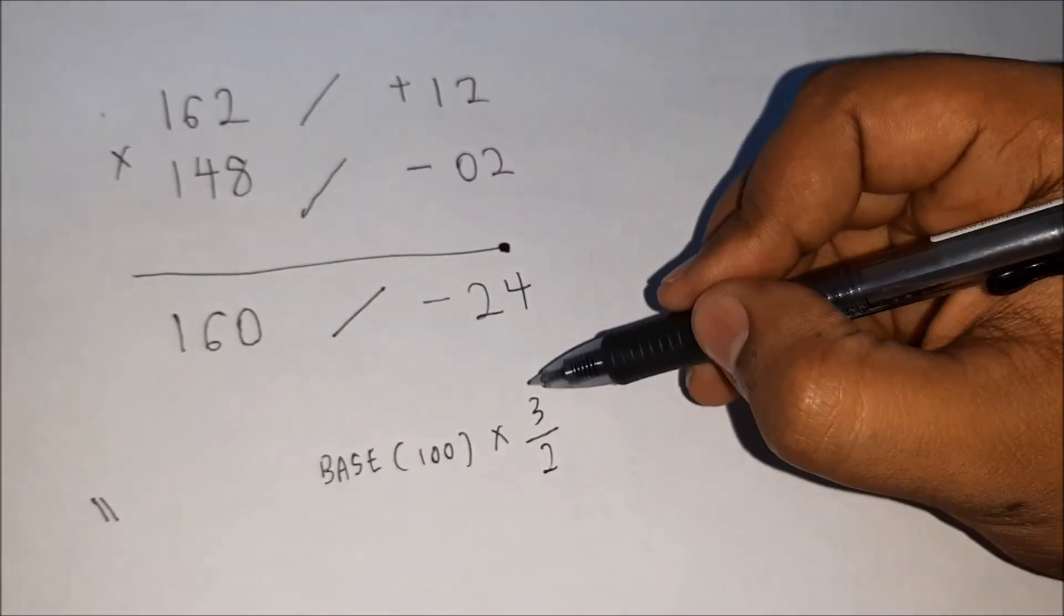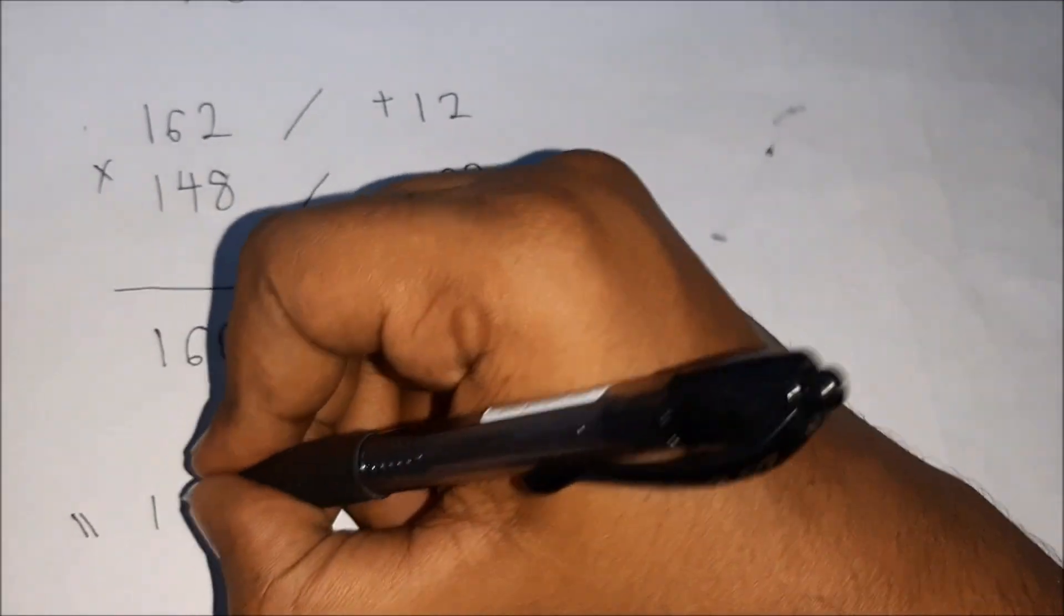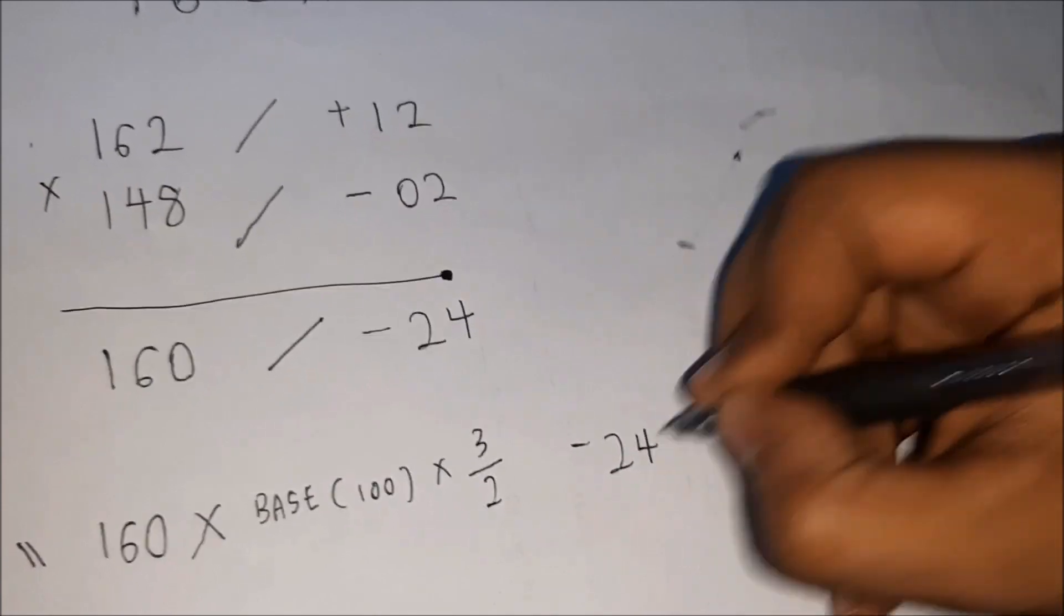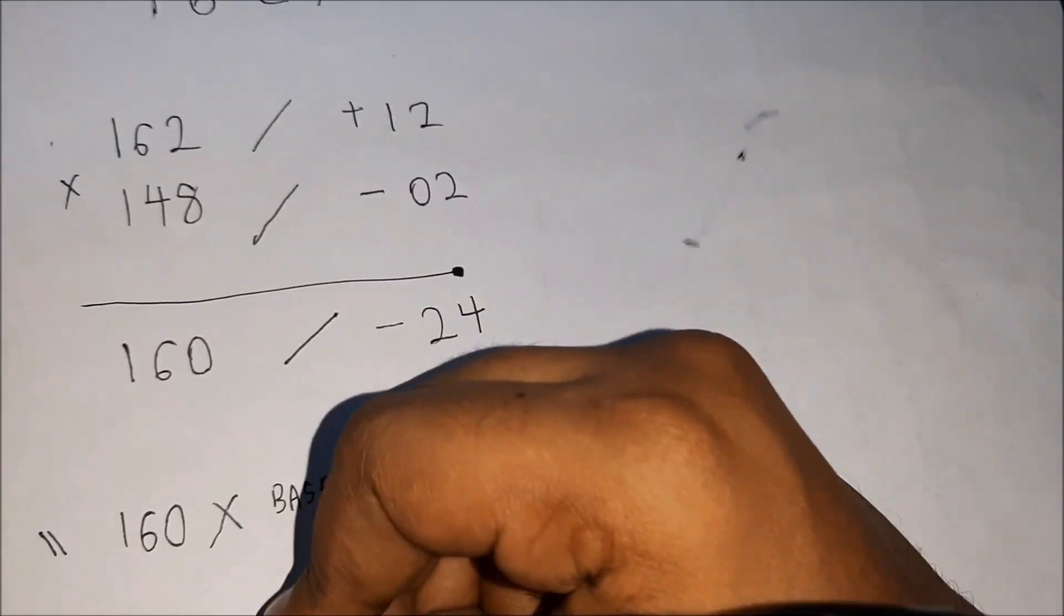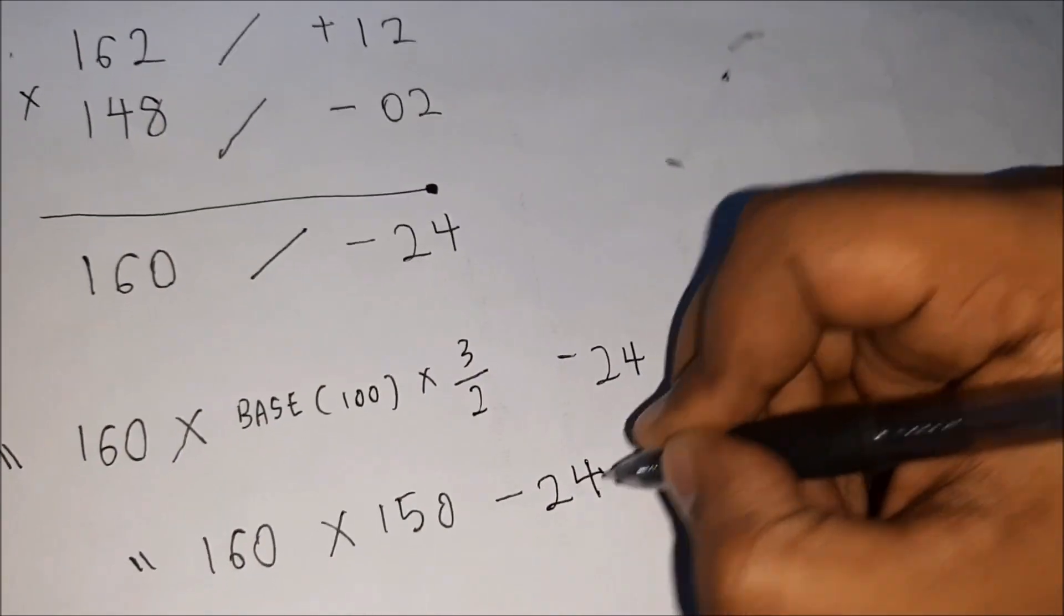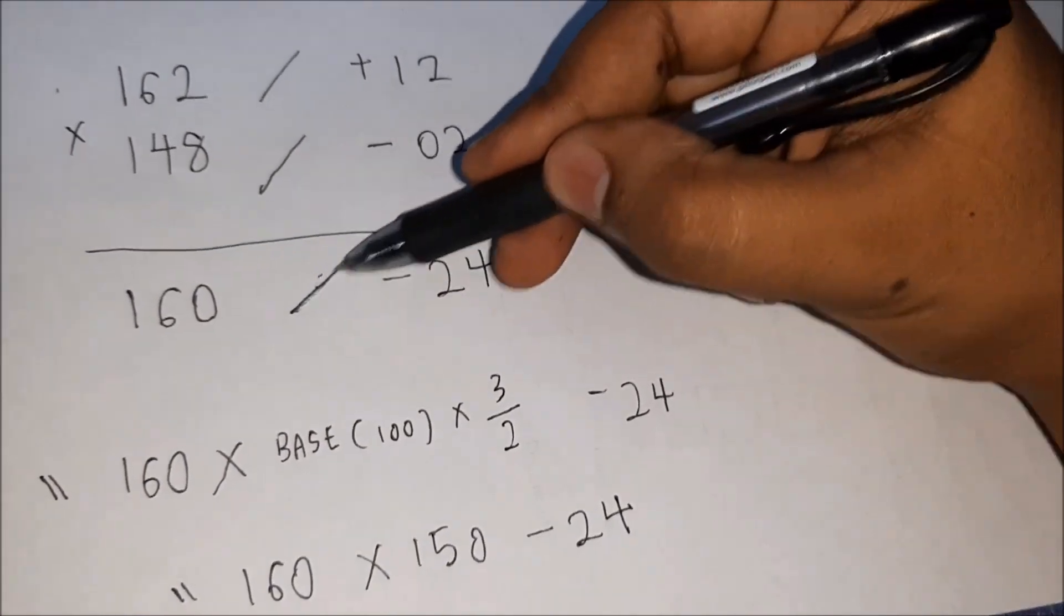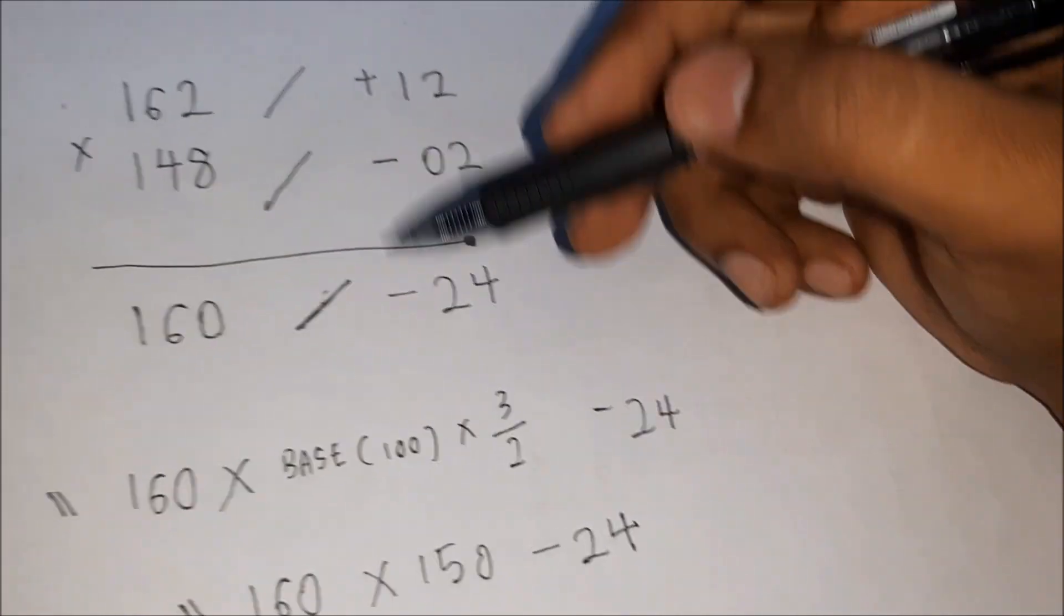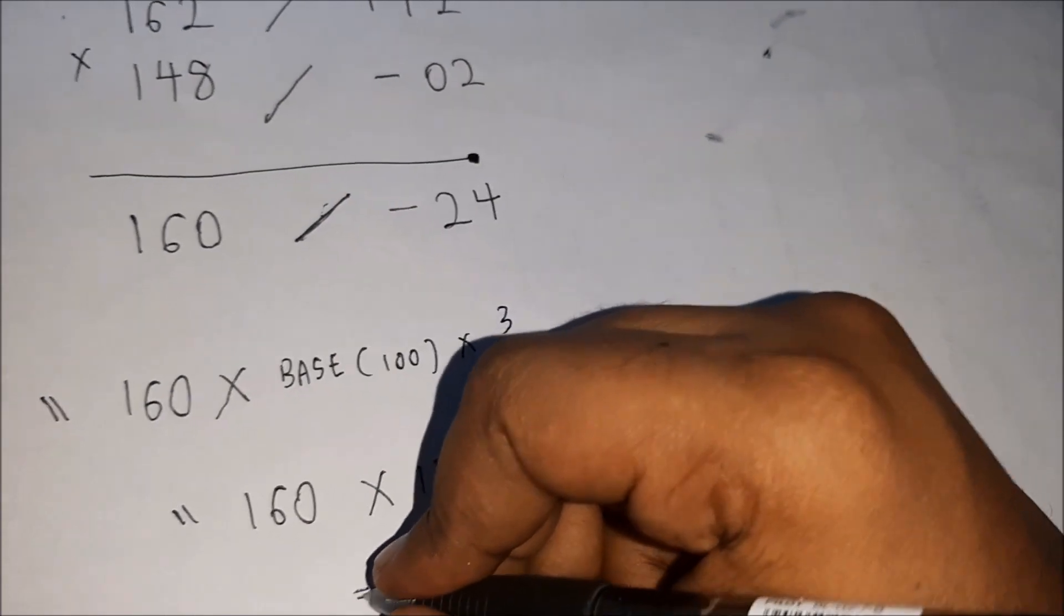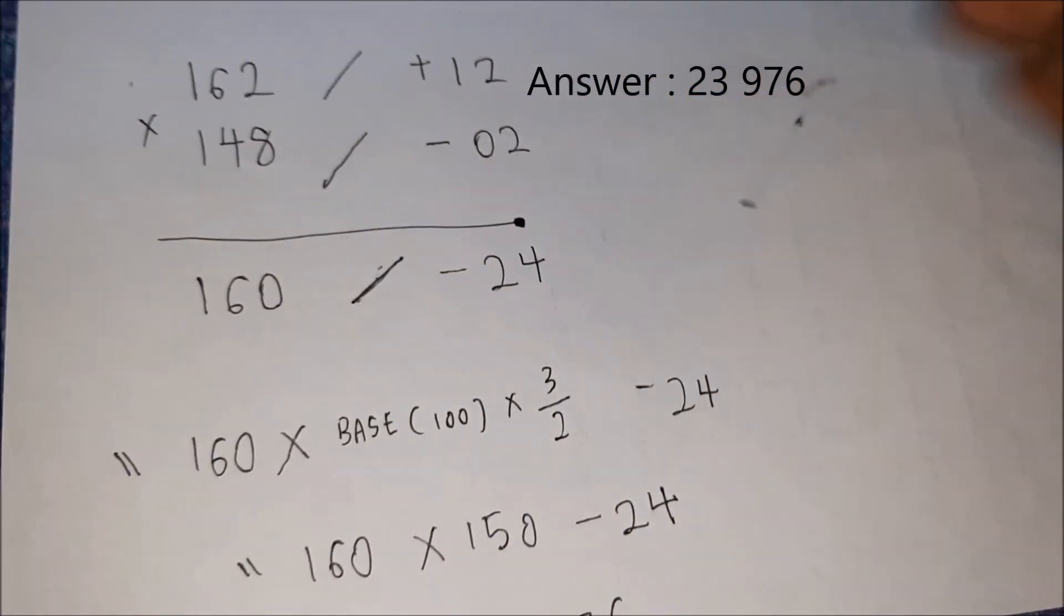So same thing: 160 times this, and finally minus 24. In other words, 160 times 150 minus 24. We just substitute this partition with the base, with the multiplication factor, which is 150, since the digit is close to 150. You can work it out and you'll get the answer.